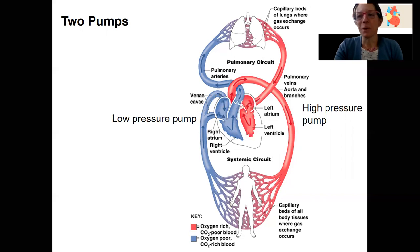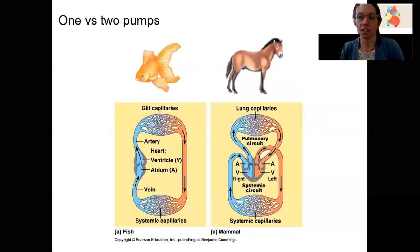One little bit of comparative anatomy that I like to stick in here is this idea of two pumps. Again, not every organism has this. So this is what I just showed you, right? This is what humans have as well. These two separate pumps. Goldfish actually, many fish, don't have that same setup.